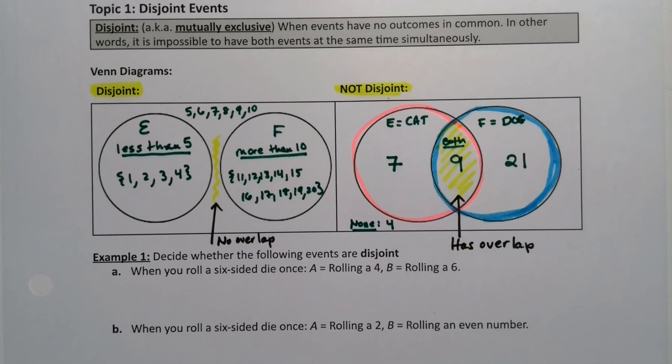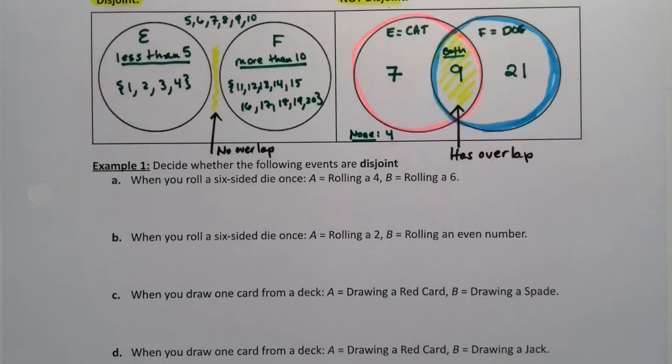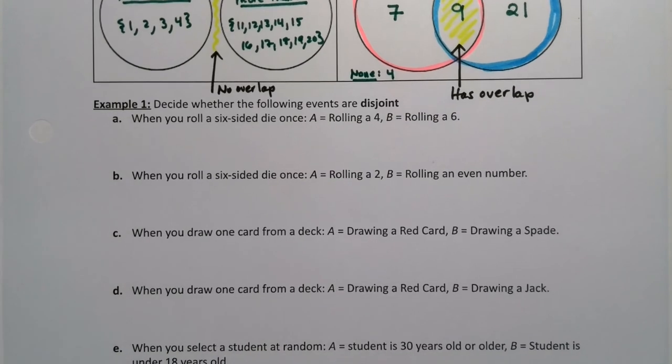If there's no overlap, no ability to have both, that's disjoint. No overlap. Whereas this one has an overlap. If you have an overlap, if you can have both at the same time, then they are not disjoint. Or in other words, they're joint. They're joined together. So let's put our new found knowledge to the test and see if we can do it with an example.